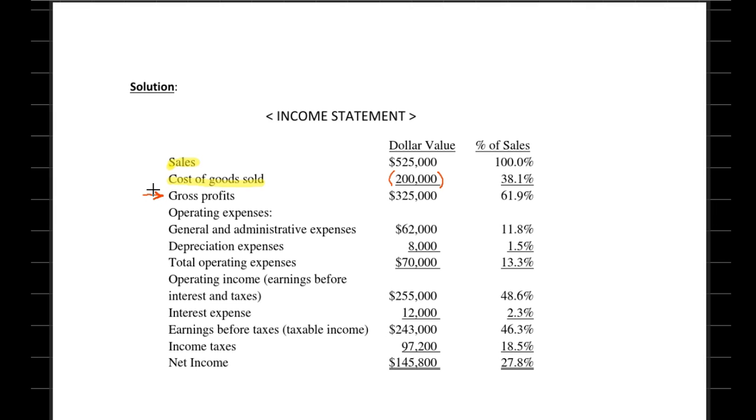Make sure not to miss this number. Then we look into our expenses. If you remember, we have two operating expenses including general and administrative expenses and depreciation expenses. The total sum for these two figures is $70,000, and therefore our operating income is the next number that we can find.